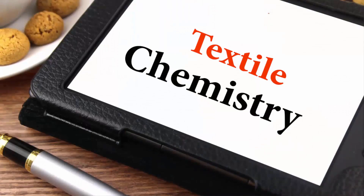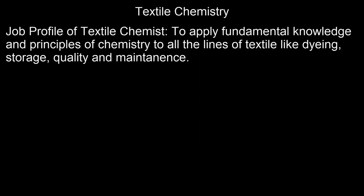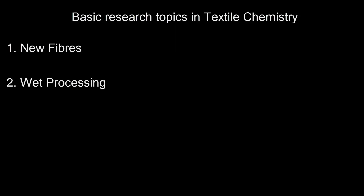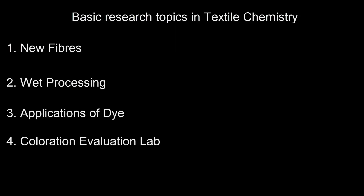The next branch is textile chemistry, where chemical techniques and processes are applied to textiles. As a textile chemist, your job involves applying the fundamental knowledge and principles of chemistry to all types of textiles — including dyeing, storage, and quality maintenance. Basic PhD topics in textile chemistry include new fibers, wet processing, applications of dyes, coloration, and evaluation lab.